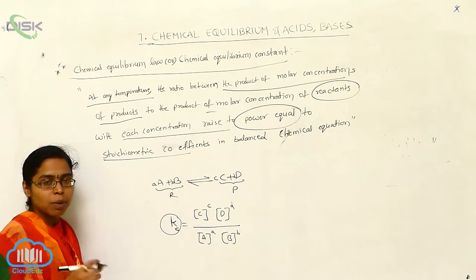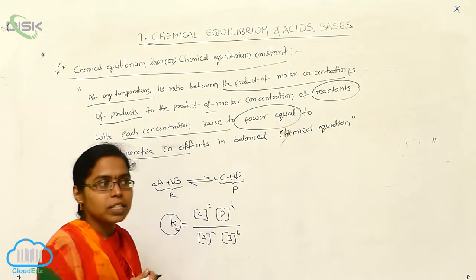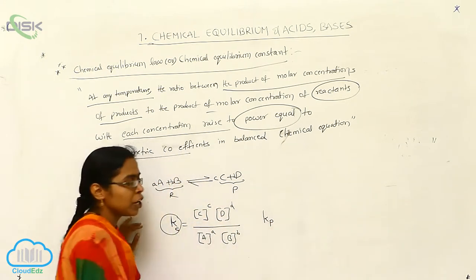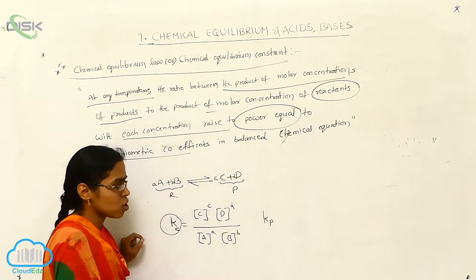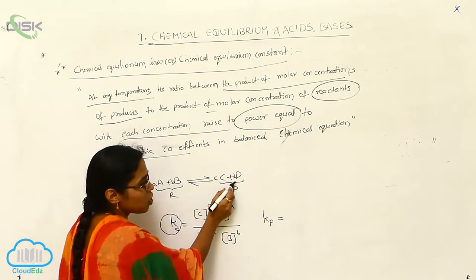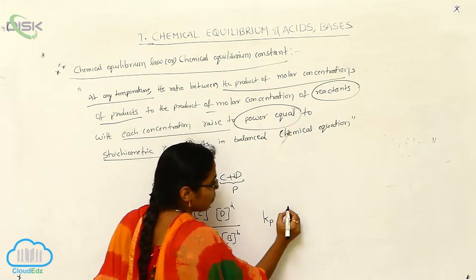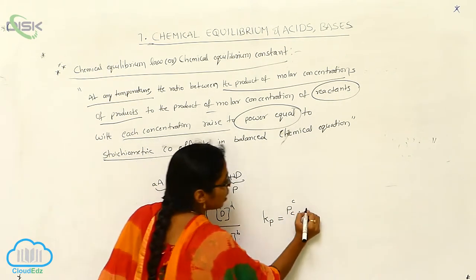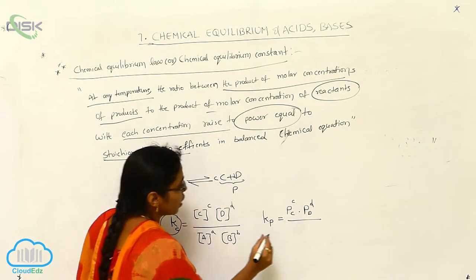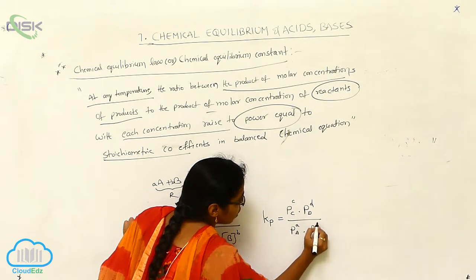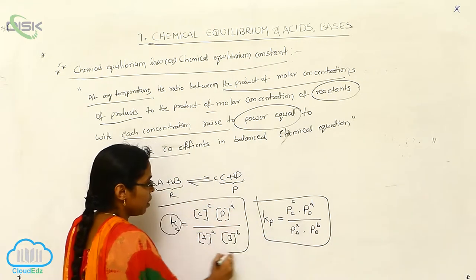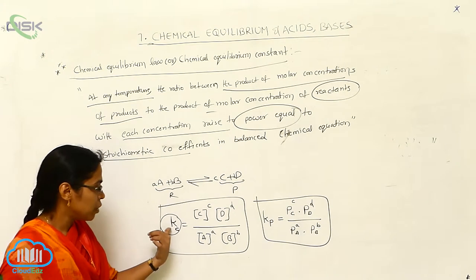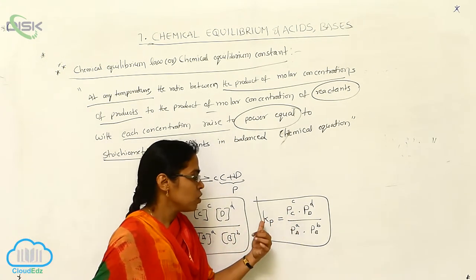If gas molecules are involved, for gas molecules we should not use concentration. Instead of concentration, we use partial pressures. Whenever we use partial pressures, the equilibrium constant is written as Kp, where P means partial pressure. For Kp, we write partial pressures of products over partial pressures of reactants: (Pc)^c times (Pd)^d divided by (Pa)^a times (Pb)^b. This is also called the chemical equilibrium constant — Kc uses concentration terminology and Kp uses partial pressure terminology.